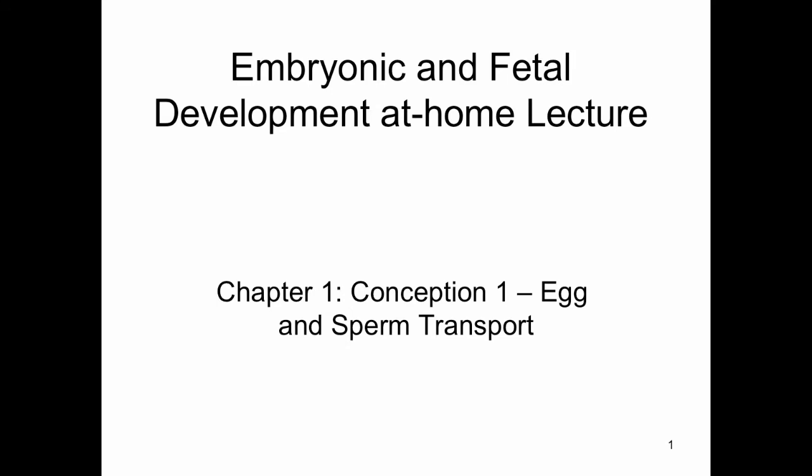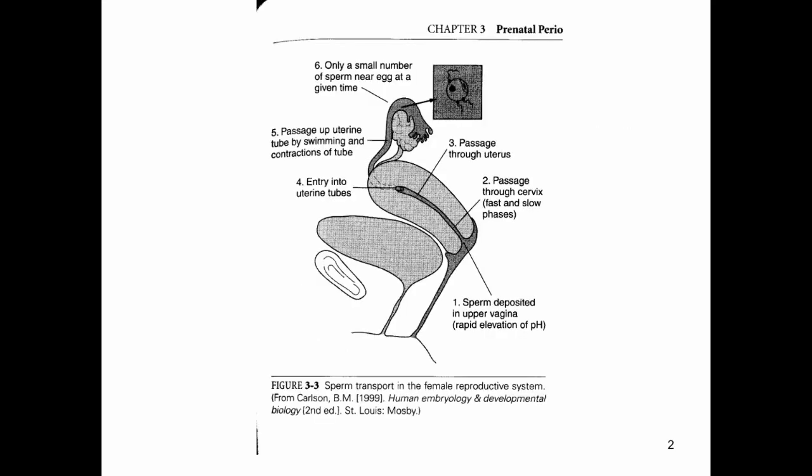The first chapter of this section on embryonic and fetal development covers conception. Before we can have an embryo grow into a fetus, we have to start at conception. One of the interesting things about conception is how often it happens considering the probability of a successful conception, which is on average about 30% at best every time that you attempt to conceive.